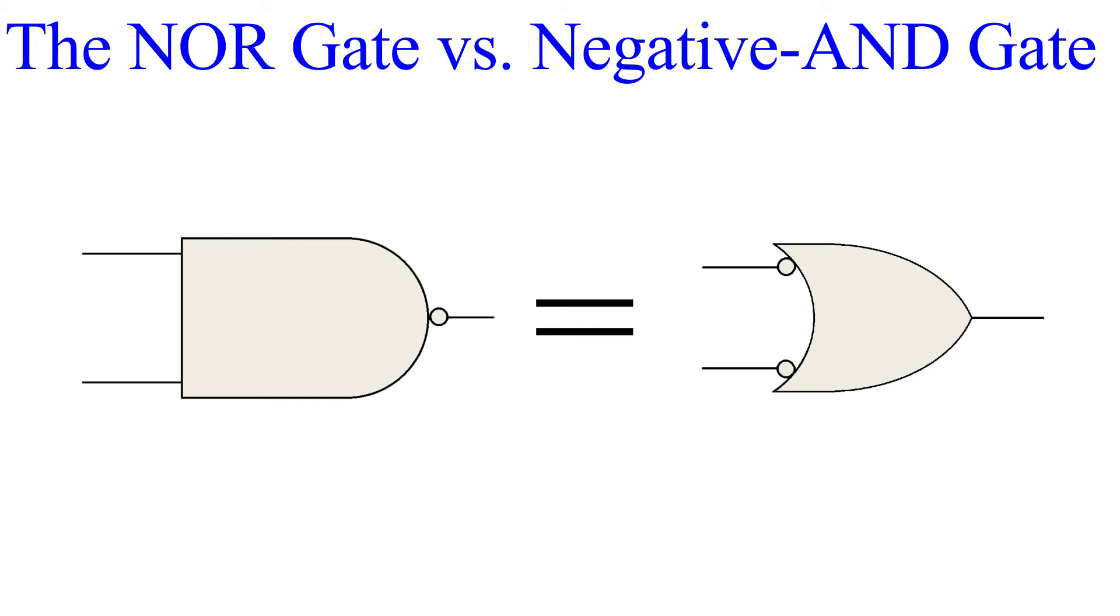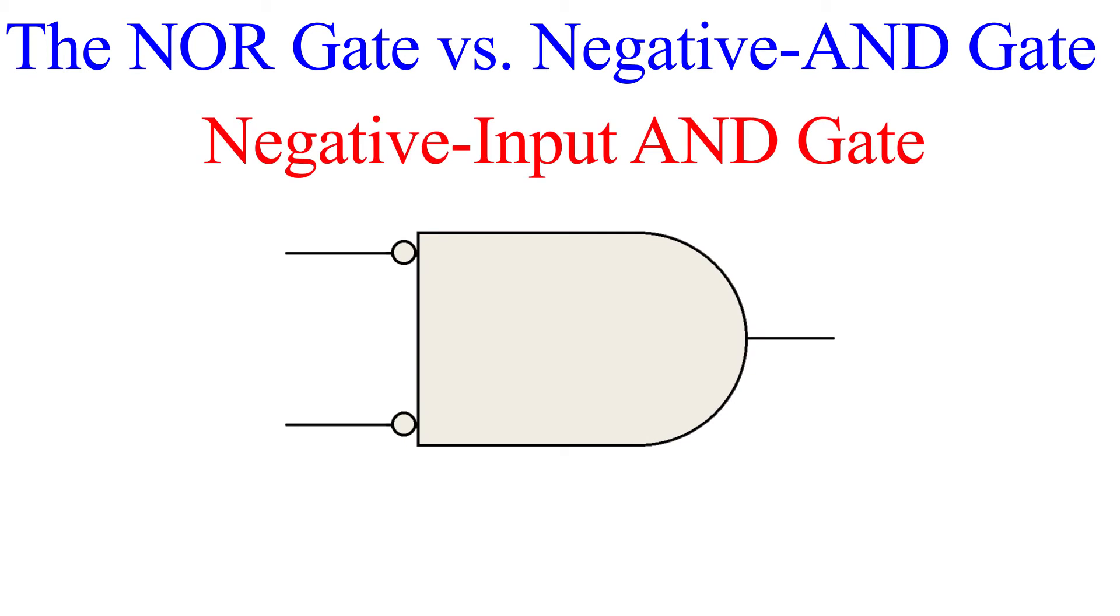Just like the NAND gate has a twin gate that produces the exact same truth table—the negative input OR gate—so too does the NOR gate. You can probably guess what this is. If you said to yourself a negative input AND gate, then you're right on the money. This gate has inverted inputs on an AND gate. It will produce the exact same truth table as a NOR gate.